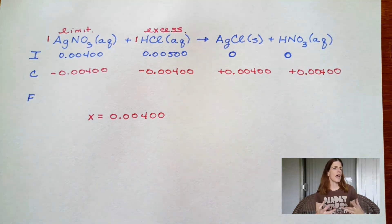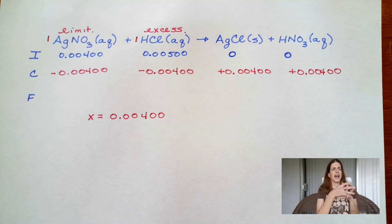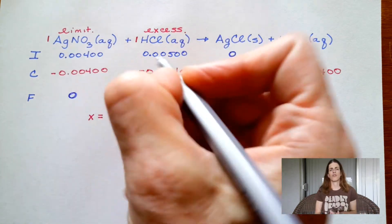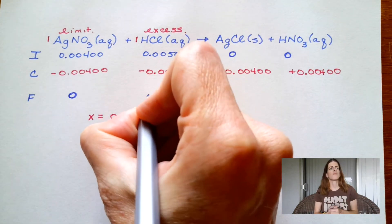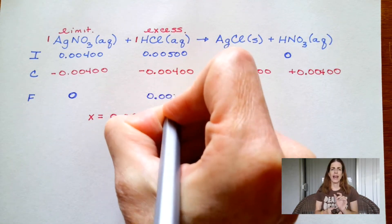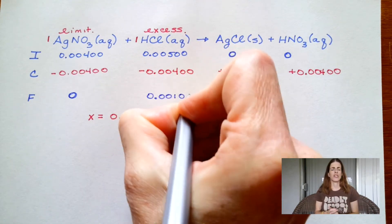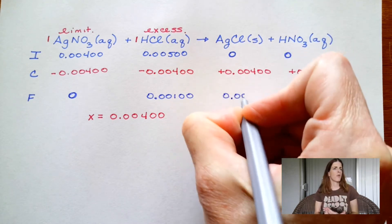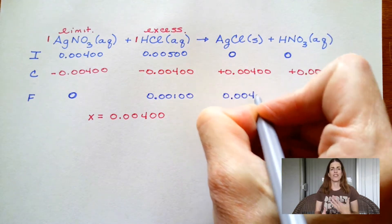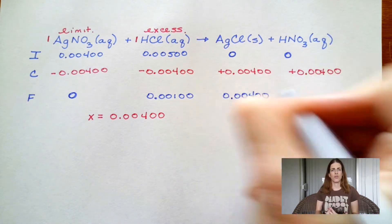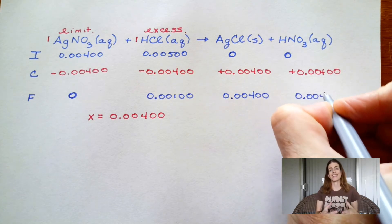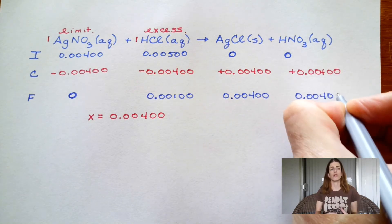I go ahead and subtract, and as we expect there are zero moles of silver nitrate left. Then we have a little bit of hydrochloric acid left over — that's our excess reagent. And here's the important value: 0.00400 moles of silver chloride. That's the value we were looking for.